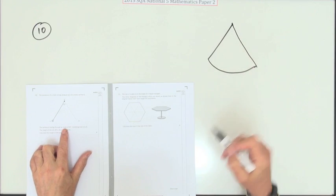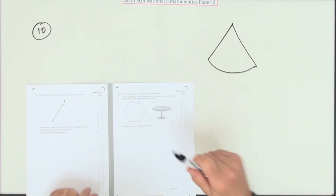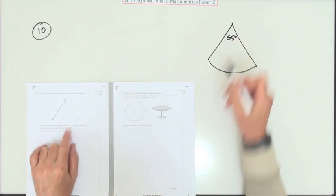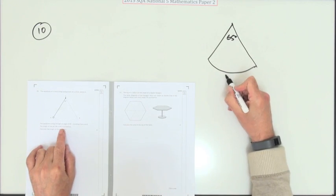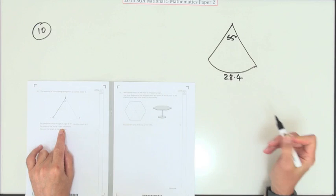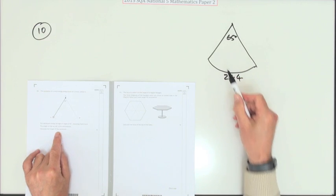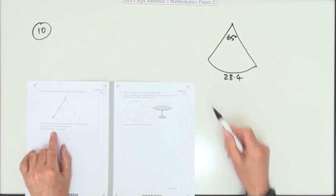Number 10. There you see a wee slice out of a circle - a fractions of a circle question. What does it tell you? There's an angle of 65 degrees in that sector, the length of the arc is 28.4. It doesn't tell you the radius, so that means this question wants you to work out that radius. What's the length of the pendulum?